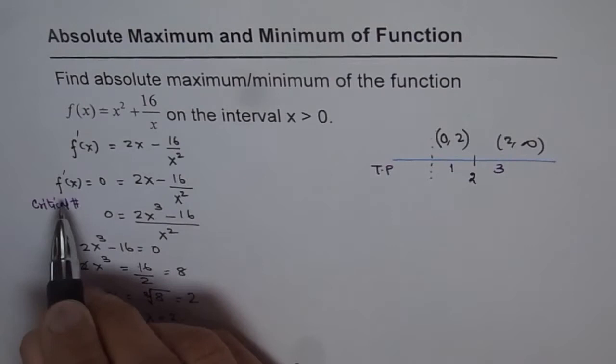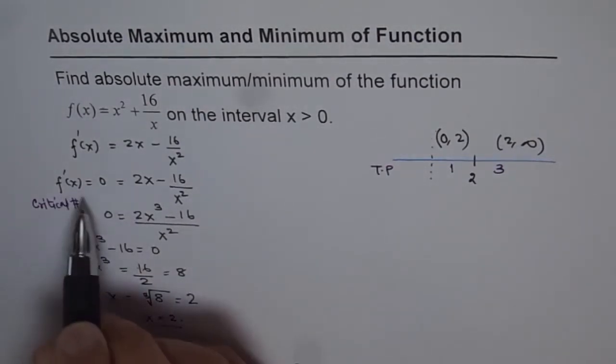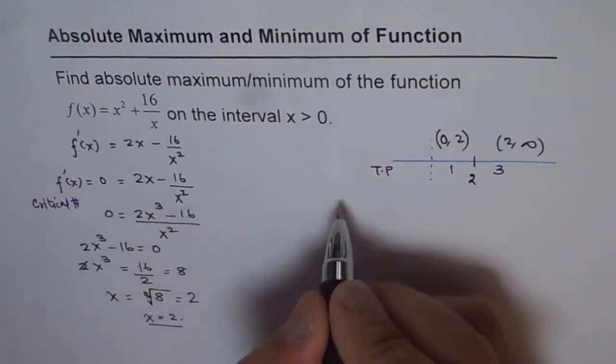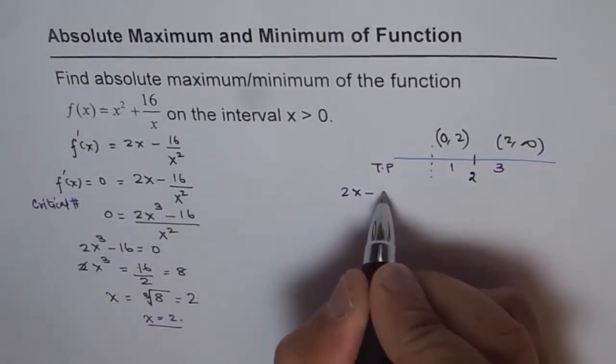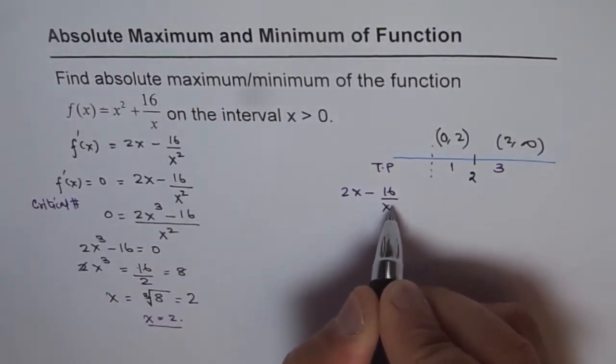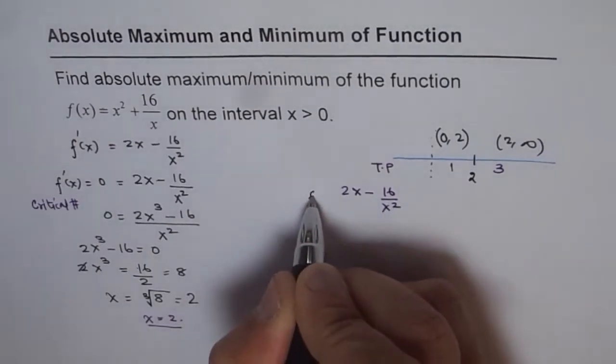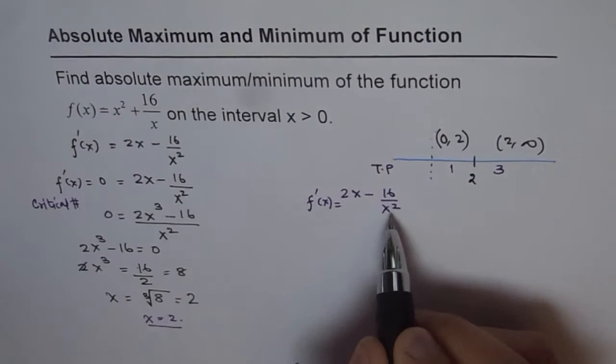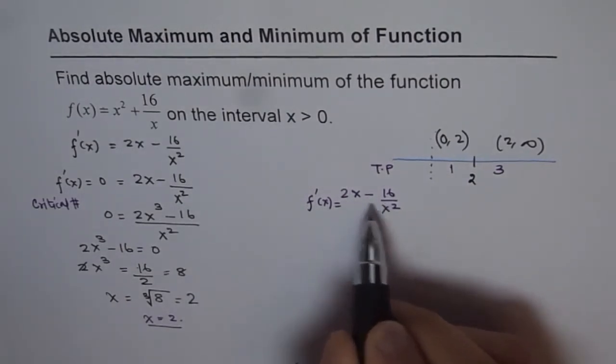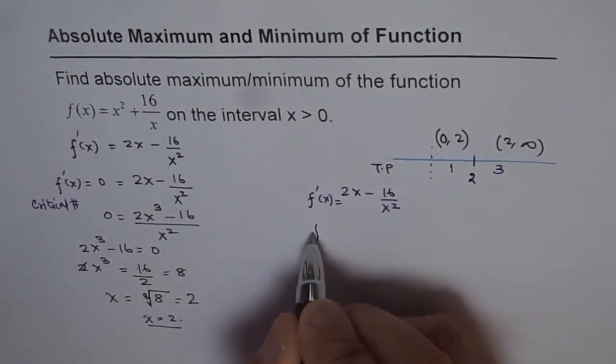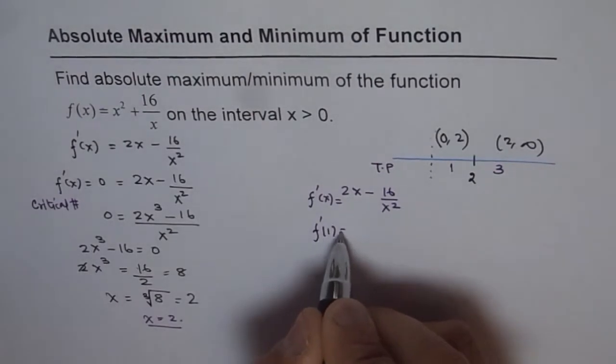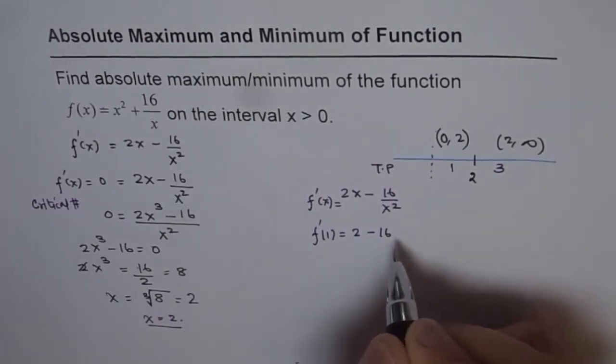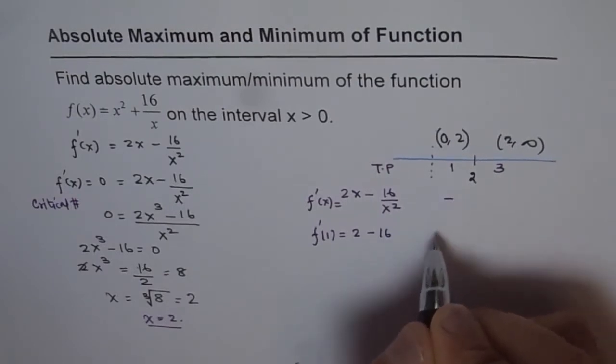The derivative for us is f'(x) = 2x - 16/x². That is the derivative. If I put 1 here in this expression, what do I get? f'(1) = 2 - 16, which is negative. So I get a value which is negative in nature.